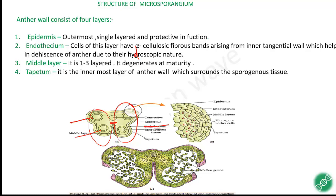The fourth layer is tapetum, which is the innermost layer of the anther wall and surrounds the sporogenous tissue. The sporogenous tissue is present in the center of the microsporangium. So the structure is: bilobed anther → microsporangium → sporogenous tissue. There is no confusion here.